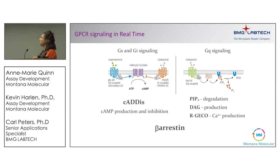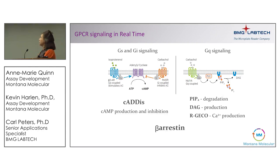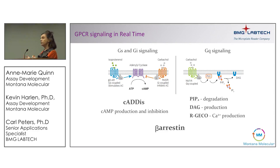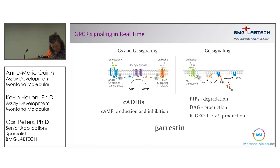There are fluorescent biosensor tools that let you look at both GS and GI — so cyclic AMP production and inhibition of cyclic AMP production. Each of these different fluorescent proteins can be combined because they're available in green and red. On the GQ side you can use diacylglycerol, PIP2, or calcium, and combine any of those with the beta-arrestin sensor. All of these can be used to both report and quantify bias.